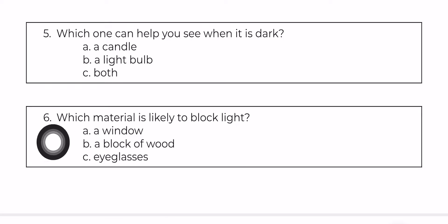Let's get to number six. Which material is likely to block light? When we say likely to block light, it's more of like saying which one can mostly or completely block light? A. A window. B. A block of wood. C. Eyeglasses. A block of wood is the wood, like square or rectangular shape.